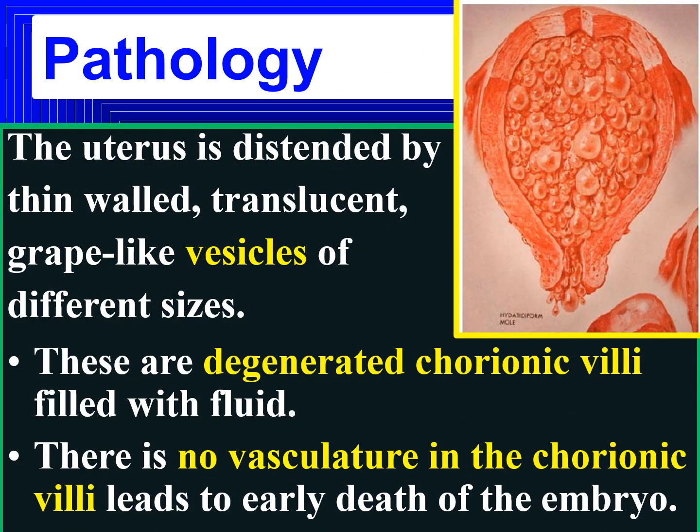The pathology of vesicular mole: the uterus becomes distended by thin-walled, translucent, grape-like vesicles of different sizes — a peculiar feature of this condition. These grape-like structures grow inside the uterus, as shown in the figure. They are degenerated chorionic villi filled with fluid, with no blood supply, which leads to the death of the fetus or embryo.